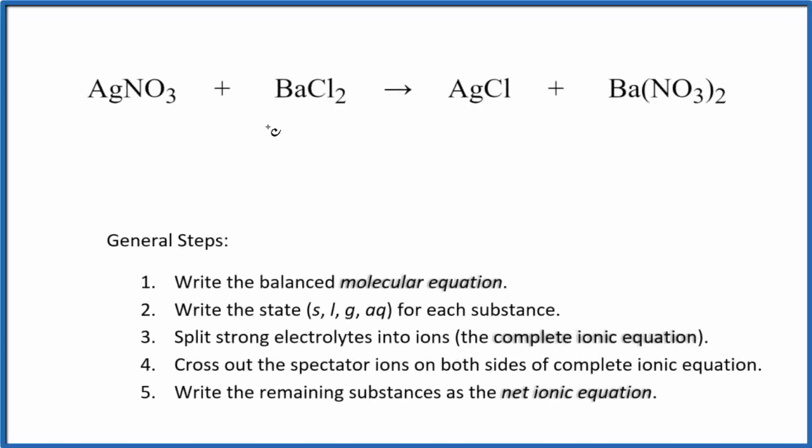In this video we'll write the net ionic equation for AgNO3 plus BaCl2. This is silver nitrate and barium chloride. First thing we need to do is balance the molecular equation. If we put a 2 here and then a 2 here, the equation would be balanced.